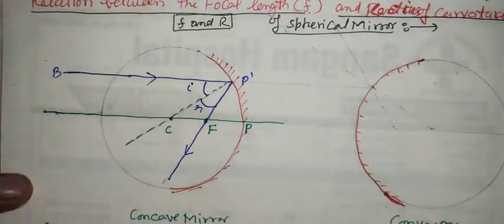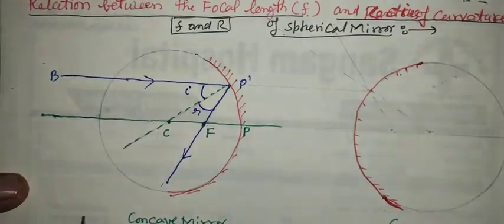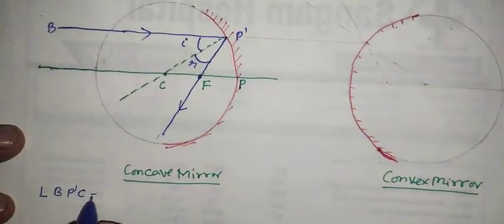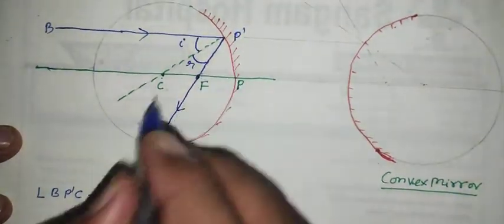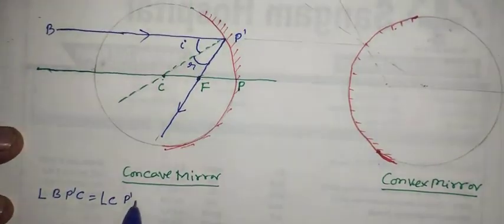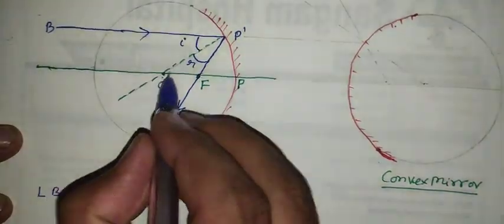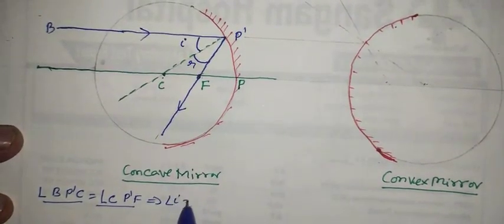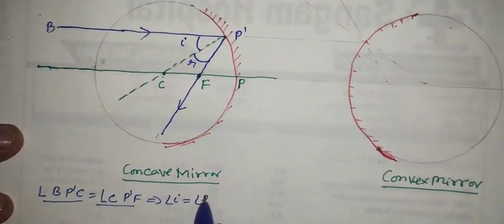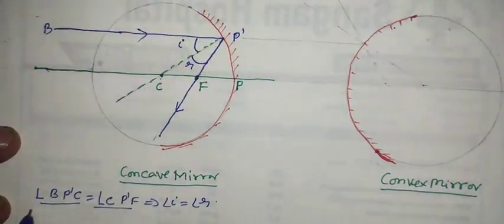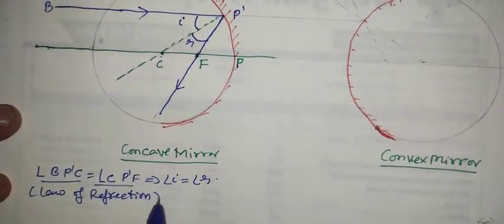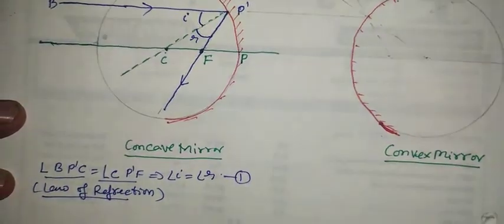Now see carefully: angle B P dash C is equal to angle C P dash F. This implies that angle i is equal to angle r. Both these angles are equal by the law of reflection. Let this be equation number one.